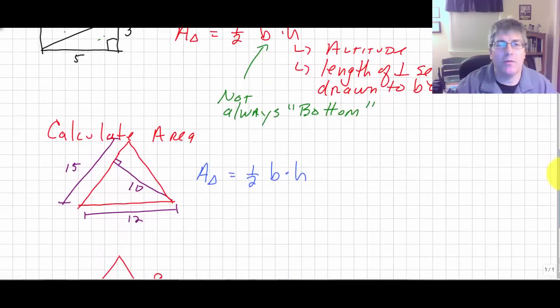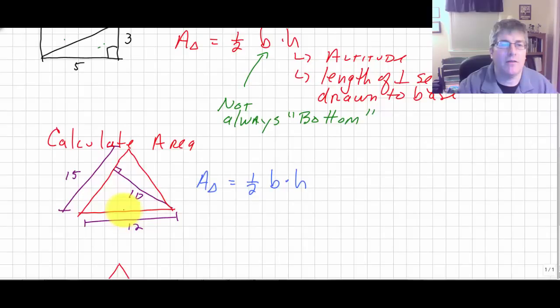So some examples, we might want to calculate the area of this particular triangle. Well, the 12 appears to be the bottom, but it's not the base. Our base is the 15. So the 15 is the base because we have an altitude drawn to this side.